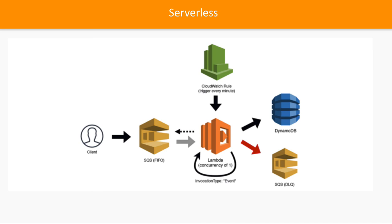If you prefer a server-based environment, you might deploy microservices on EC2 instances, AWS ECS, AWS EKS, a Kubernetes cluster, or container services rather than writing Lambda functions.